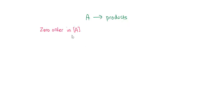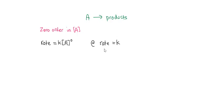So let's say if you have a reactant A producing products. If A is a zero order reaction, the rate law is: rate is equal to K times the concentration of A to the power of 0, or rate equals K. From the rate law, you can determine the units of K. The units of K for each order of reaction are different.